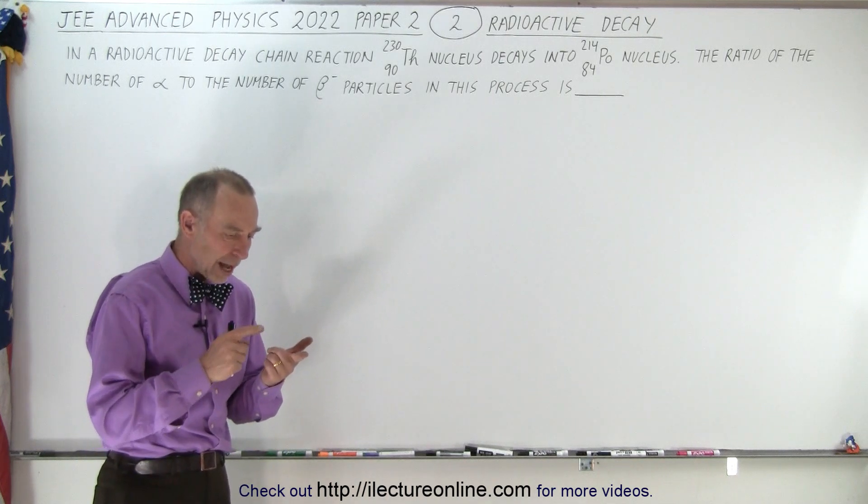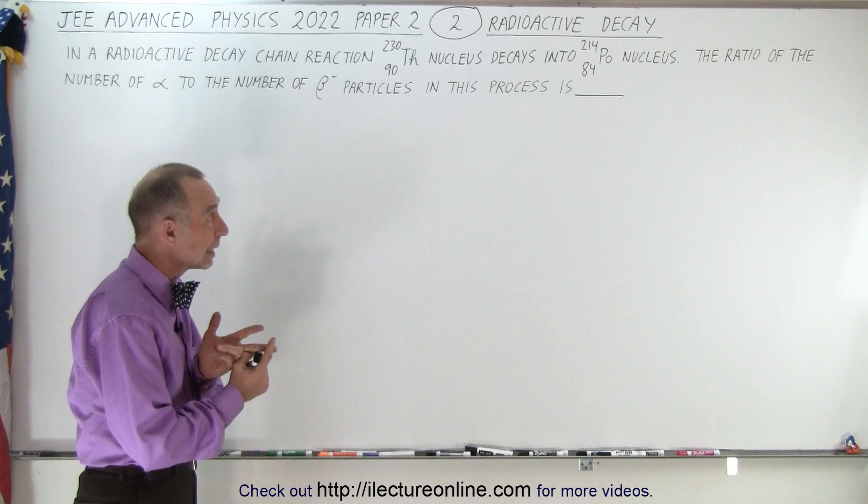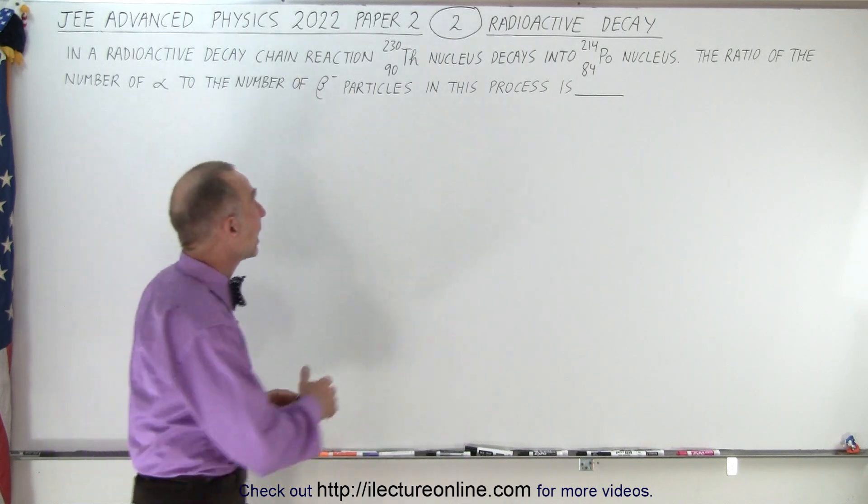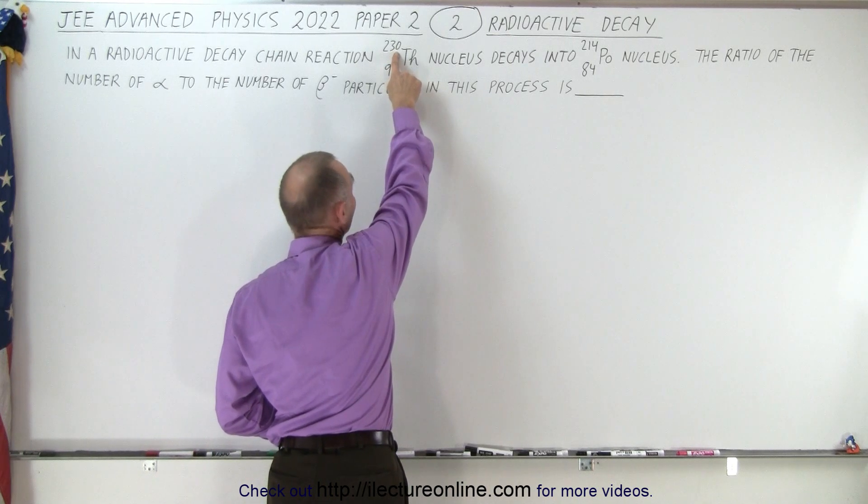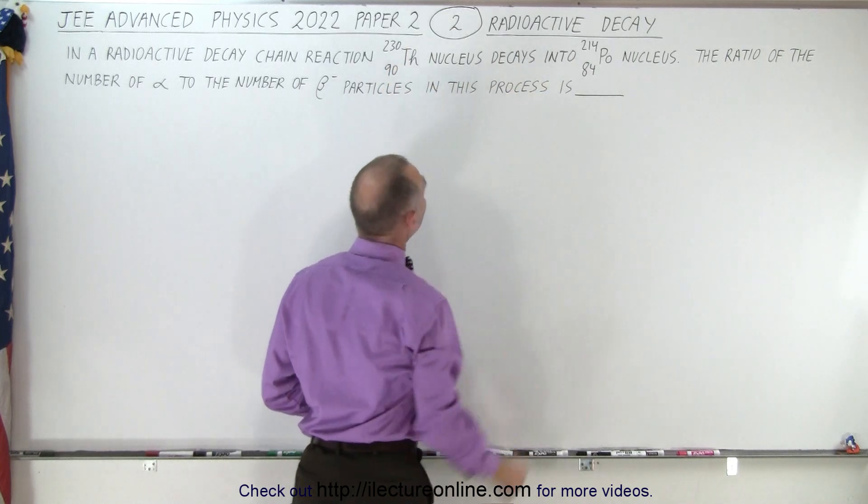So you have to know how many alpha decays there will be and how many beta decays there will be, and you can kind of guess, because notice for every alpha decay you have a decrease of 4 in the total mass of the nucleus. So the difference between 230 and 214, that would be 16, that would be 4 alpha decays.